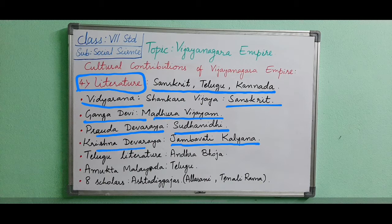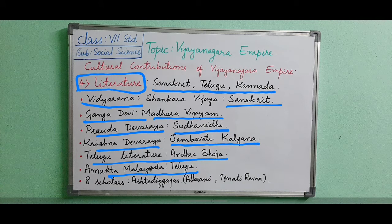Krishnadeva Raya encouraged Telugu literature and because of this he got the title Andhra Bhuja. He himself was a poet and wrote the book Amukta Malyada in Telugu. There were eight famous scholars called Ashtadigajas in his kingdom, and among the most famous was Tenali Rama, who we still remember today.